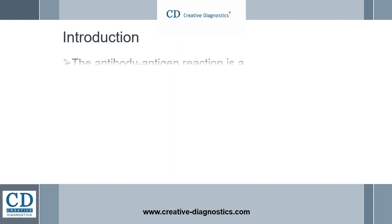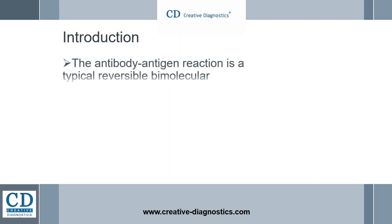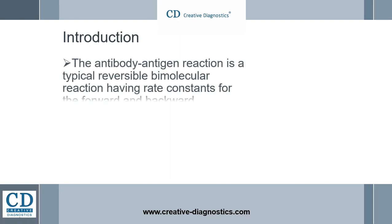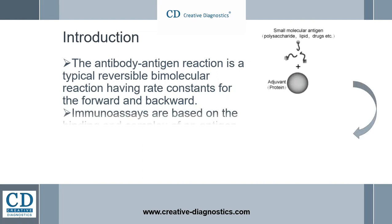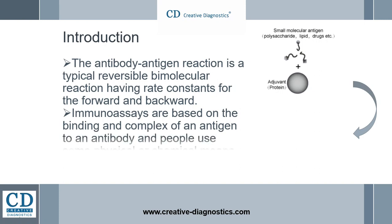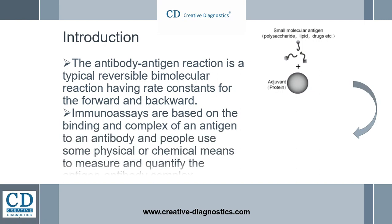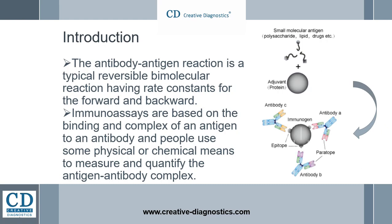The antibody-antigen reaction is a typical reversible bimolecular reaction, having rate constants for the forward and backward reactions that are dependent on the concentration of the antigen and antibody. Affinity for the antigen is defined by the association constant of the antibody for its antigen, temperature, pH, and other environmental conditions. Immunoassays are based on the binding and complex of an antigen to an antibody, and people use some physical or chemical means to measure and quantify the antigen-antibody complex.